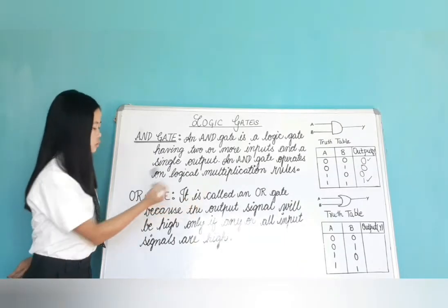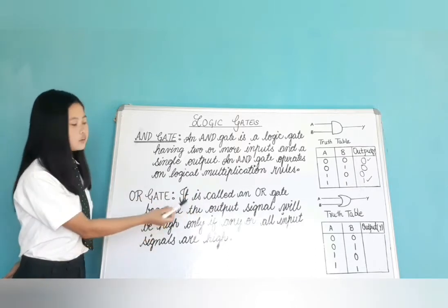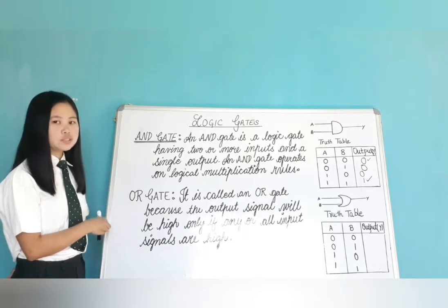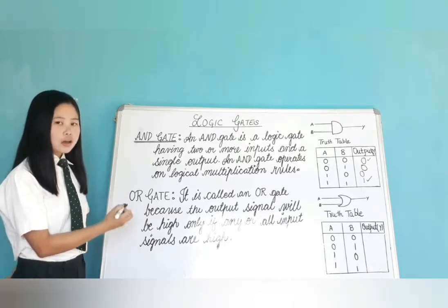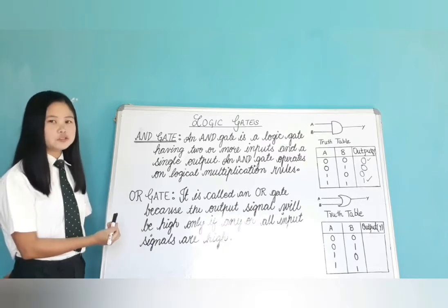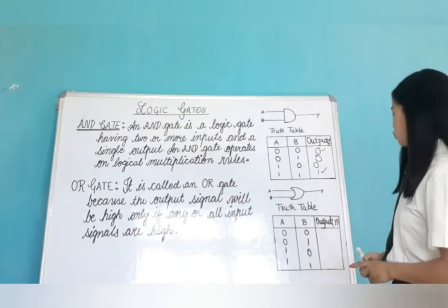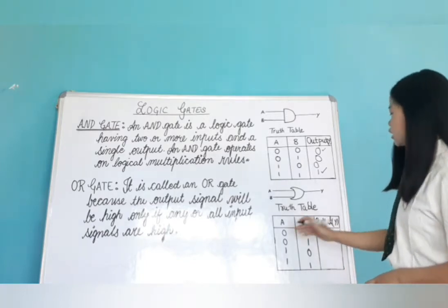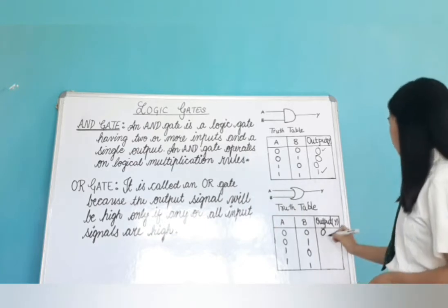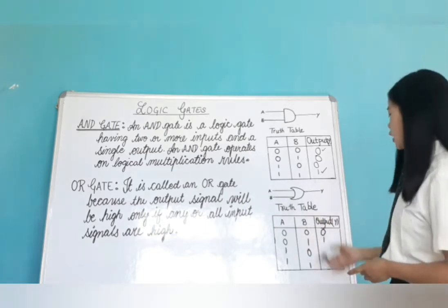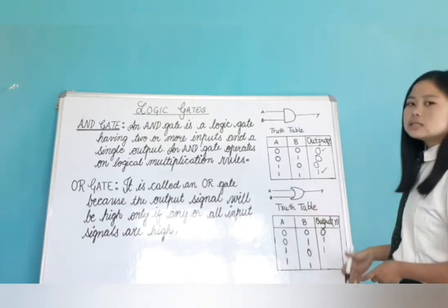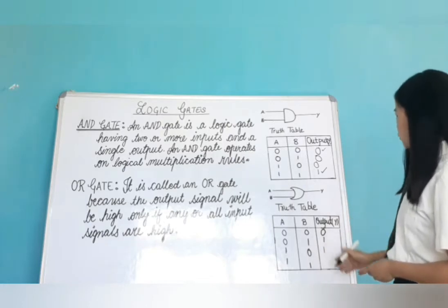Now, OR gate. It is called an OR gate because the output signal will be high only if any or all input signals are high. OR gate can also have two or more than two input signals. If you want a high output signal, then either of the inputs should be high. In the truth table: both signals low gives low output; input A low and B high gives high output; A high and B low gives high output; both signals high gives high output.